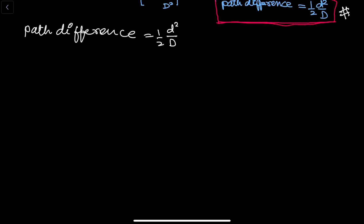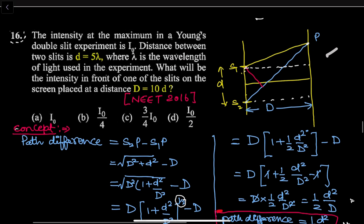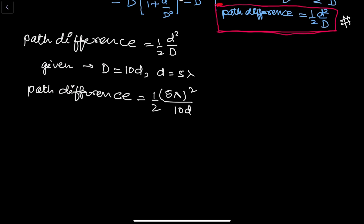Now see, in the question the given values are: capital D = 10d (small d), and small d = 5λ. Substituting into the path difference formula Δx = d²/(2D): we get (1/2) × (5λ)² / (10d) = (1/2) × 25λ² / (10d). Let me place the values carefully here.